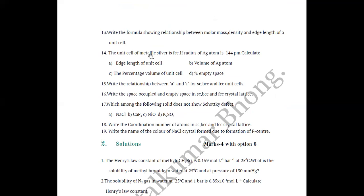Question 14: The unit cell of metallic silver is FCC. If the radius of the Ag atom is given as 144 picometers, calculate (A) edge length of the unit cell, (B) volume of the Ag atom, (C) percentage volume of the unit cell occupied, and (D) percentage empty space. Up to 3 of these parameters can be asked for 3 marks.